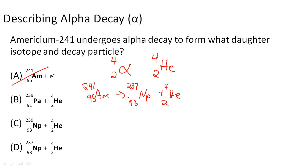So this is going to be the daughter isotope, and this is going to be the decay particle. So D must be our answer for this problem.